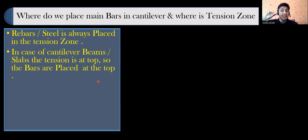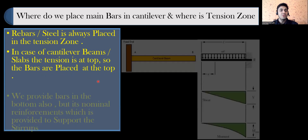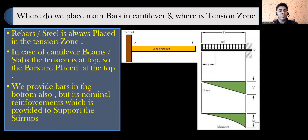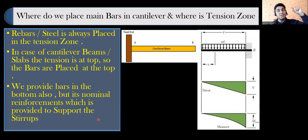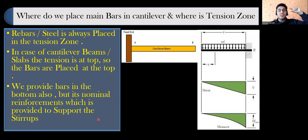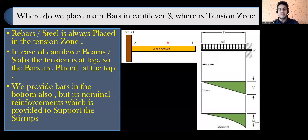In a cantilever beam or slab, the tension is at the top, so bars are placed at the top. We also provide bars at the bottom, but only as nominal reinforcement to support the stirrups. Since tension is at the top, the main steel goes on top; the bottom steel is minimal — just enough to hang the stirrups.